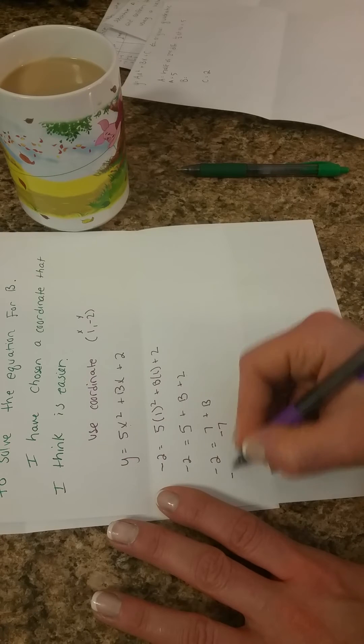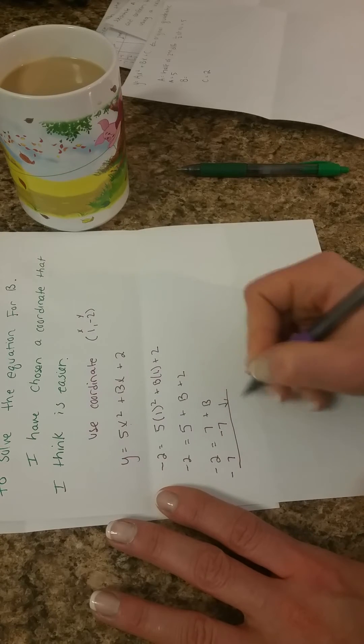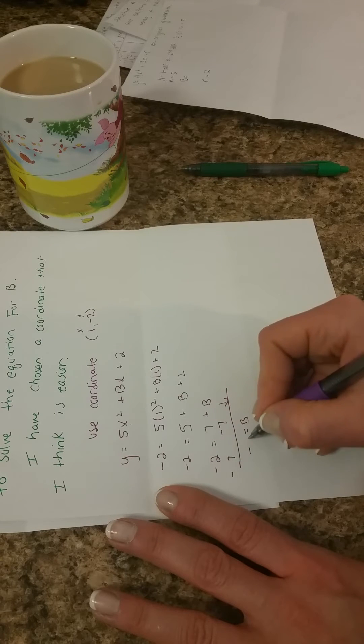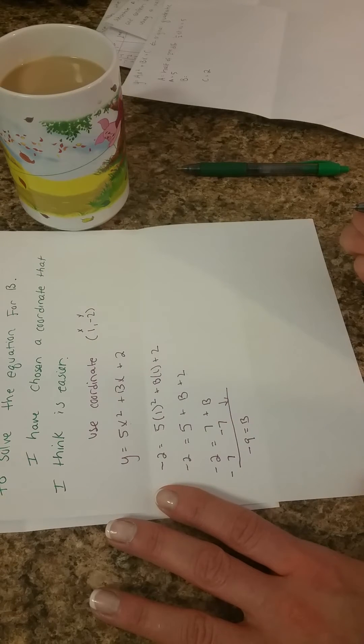Subtract 7 from both sides. Bring down your B. And we now know that B equals negative 2 minus 7 is negative 9. B equals negative 9.